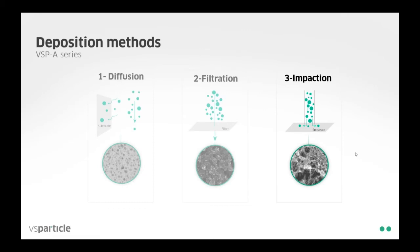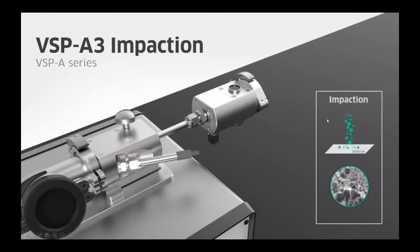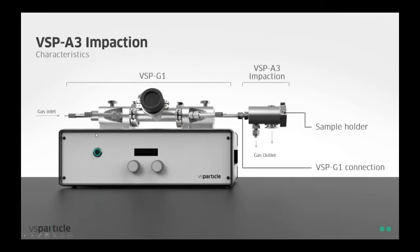Now we go to the last deposition method, which is impaction. The VSP A3 impaction unit is attached downstream of the VSP G1. The chamber is under rough vacuum — around 0.1 millibars — and we accelerate the gas through a nozzle and bombard the substrate with the aerosol. Because of the impact energy, the particles start to sinter on impact and we can make nanoporous layers. There is a gas inlet on the left-hand side, the VSP A3 impaction unit is attached downstream of the G1, and there is a sample holder which can be adjusted to different heights in relation to the nozzle. The gas outlet and a connection for the vacuum pump are also present to achieve the rough vacuum needed for impaction.